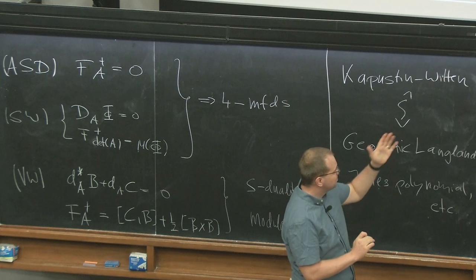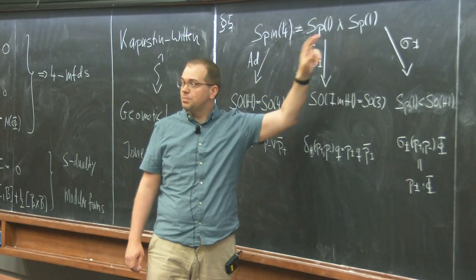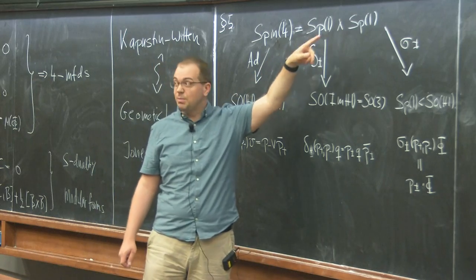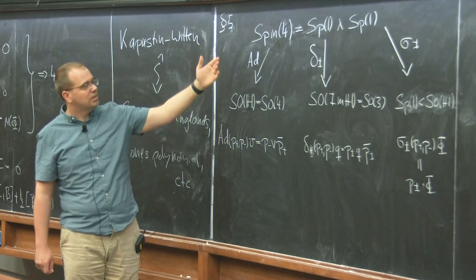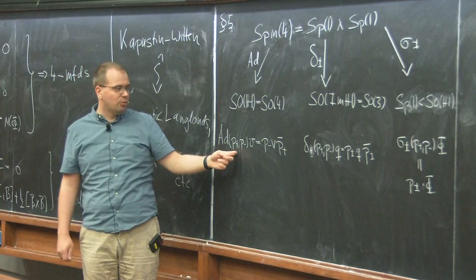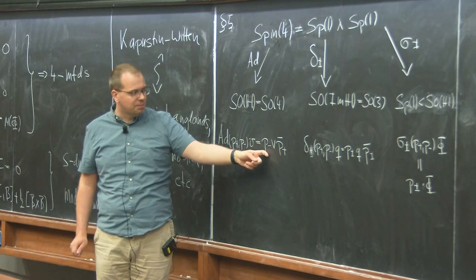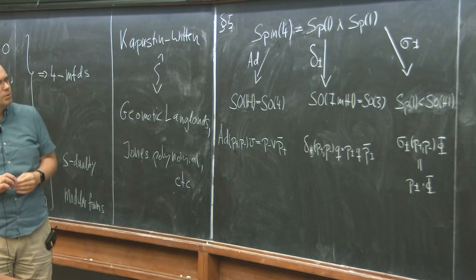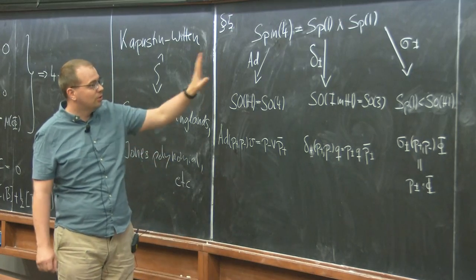Spin(4) is the same as Sp(1) × Sp(1). The reason is there's a natural map from Spin(4) to SO(4), given by a map from Sp(1) × Sp(1) to SO(4), which we think of as SO of the quaternions. We write down the map: we call the two unit-length quaternions p⁺ and p⁻, and we act on a vector v by left-multiplying with p⁻ and right-multiplying with the conjugate of p⁺. This is the vector representation, and it's a two-to-one cover.